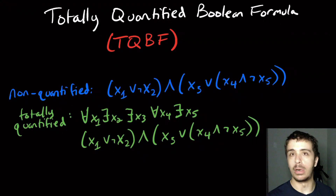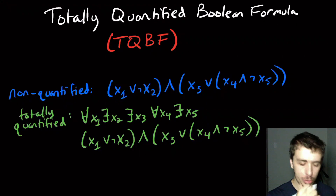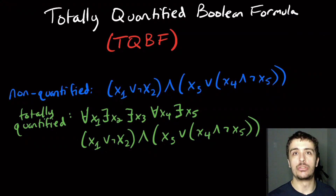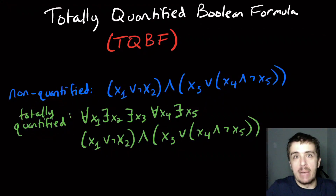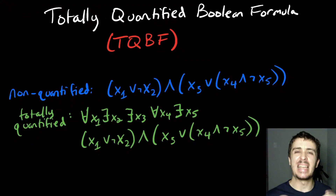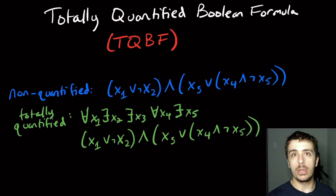The original SAT formula is actually a special case of a totally quantified formula where every variable has an 'exists' quantifier — as long as there exists an assignment to make it true, we say it's true. Because SAT is NP-complete, TQBF must be at least NP-hard. We don't know if it's in NP, since we don't know of a polynomial non-deterministic algorithm to handle the 'for all' part.